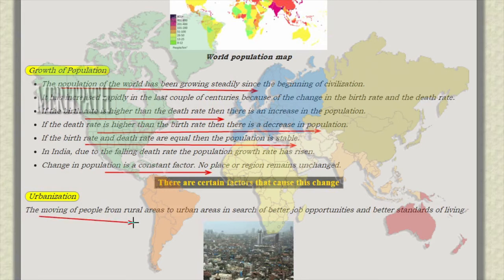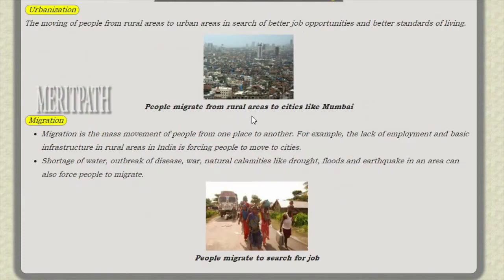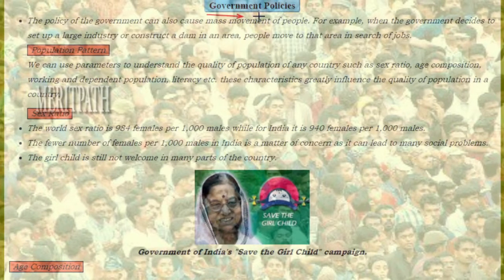There are certain factors that cause this change. The first is urbanization — people move from rural areas to urban areas in search of better job opportunities. Migration is the mass movement of people from one place to another. For example, lack of employment and basic infrastructure in rural areas in India force people to move from towns to cities. Shortage of water, outbreak of disease, and natural calamities like drought and floods can also force people to migrate.